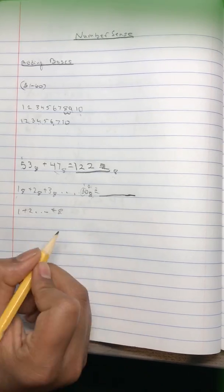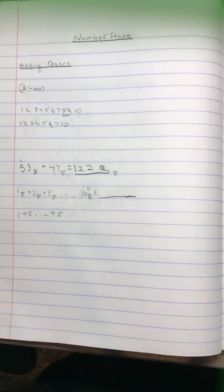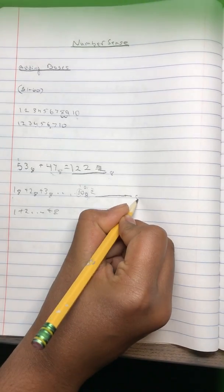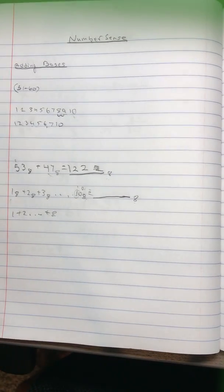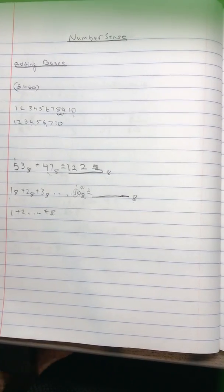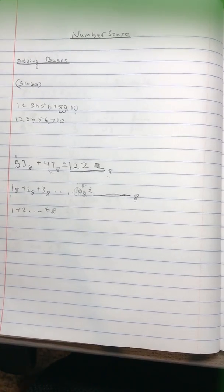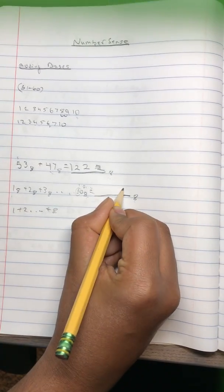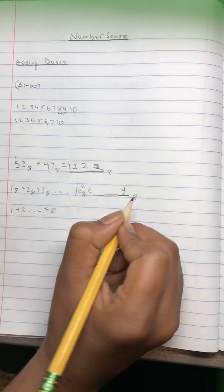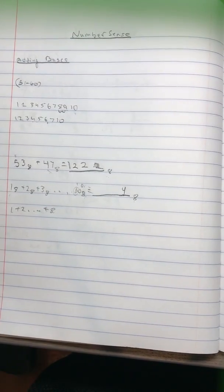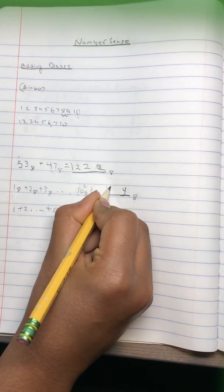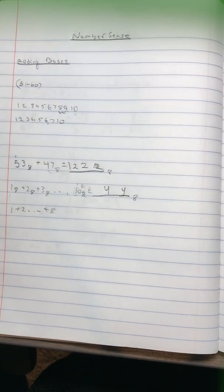To base 8, because that's what they asked this question in. So 36 divided by 8, well the remainder is 4, and it's 4 remainder 4. So you take 4, and 4 divided by 8, well, 0 remainder 4. You take another 4. 44 base 8 is the answer.